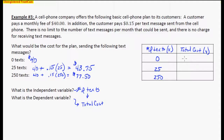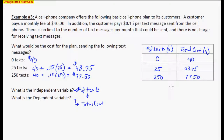My total cost is going to be my y variable. Filling in the table: x values are 0, 25, and 250; y values are $40, $43.75, and $77.50. These are really coordinates: (0, 40), (25, 43.75), and (250, 77.50). We're going to graph them onto a coordinate plane, connect the dots, draw a line, and come up with an equation.